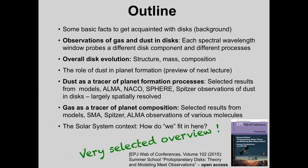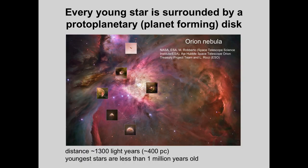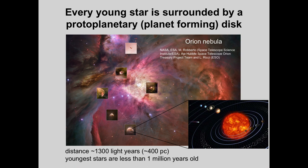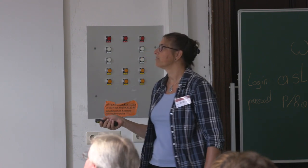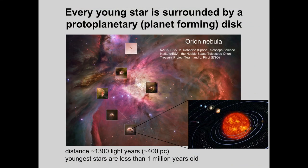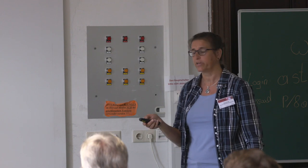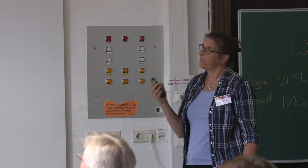Circumstellar disks — some basic facts. These disks form in star-forming regions. Every young star is basically surrounded by a disk. That is what we learned from the Hubble Space Telescope when it looked at the Orion Nebula. There are many young stars in the Orion Nebula, each surrounded by nebulosities that you can think of as a planetary system that is forming. This particular star-forming region is about 400 parsec away — 1,300 light years. The younger stars are less than 1 million years old and still contain a lot of primordial material.